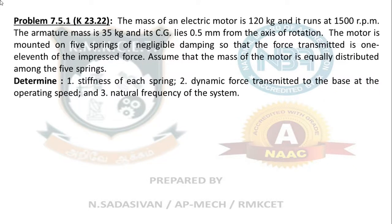This is problem K 23.22 from the Kurmi textbook. The mass of an electric motor is 120 kg running at 1500 rpm, and the armature mass is 35 kg. I want to tell you one thing: there will be two masses in all these problems. This is your dead weight and this is your disturbance creating weight, because the armature is the rotating part. When you are going to find out the centrifugal force m omega square r, you have to use this mass because this is the rotating mass.